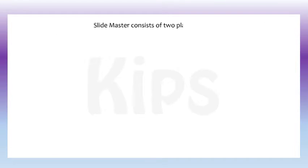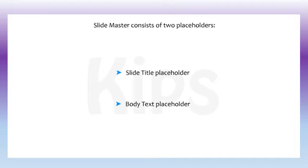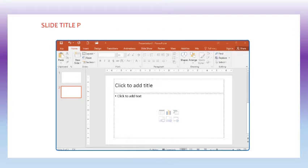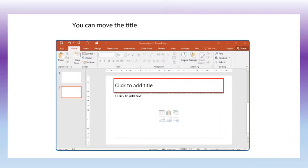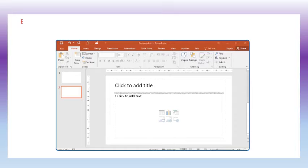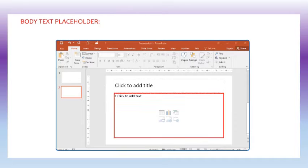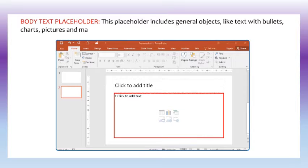Slide master consists of two placeholders: slide title placeholder and body text placeholder. The slide title placeholder is the first placeholder for the title of the page. You can move the title placeholder anywhere on a slide. The body text placeholder includes general objects like text with bullets, charts, pictures and many more.